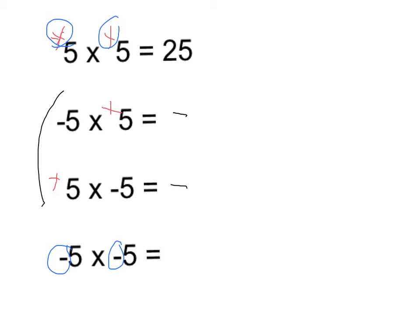The first thing we do is ignore all the signs and work out the answer. For all of these, they're all going to be 25 because they're all 5 × 5. Then the next thing we do is check the signs. Because these are both positive, the answer is a positive 25.